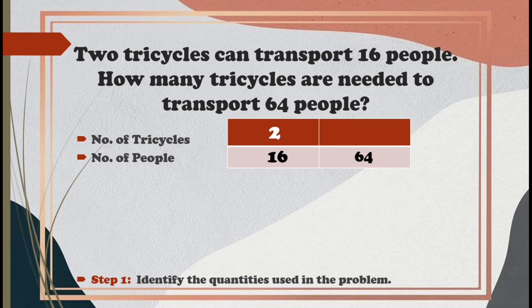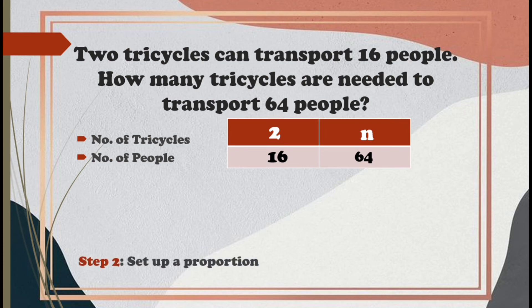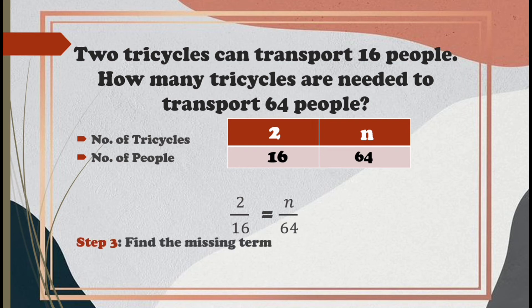Let's put first letter N. Now, for the second step, let us set up a proportion. We have 2 over 16 is equal to N over 64. And for our third step, let us find the missing term, which is N.